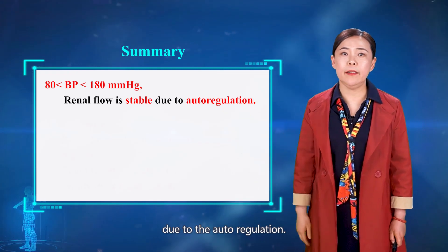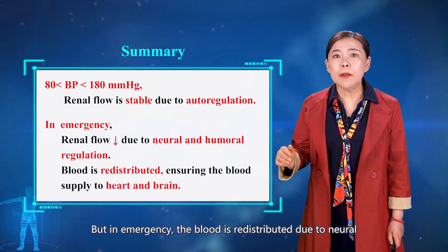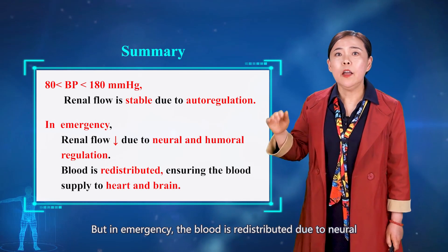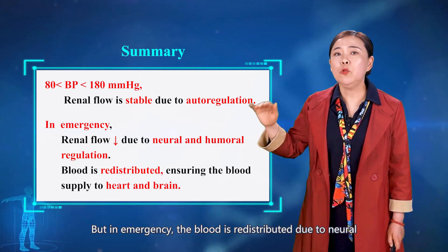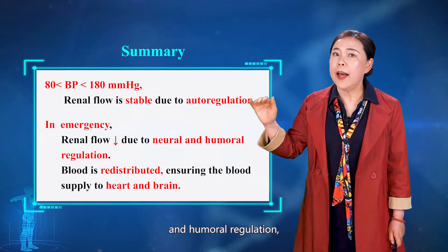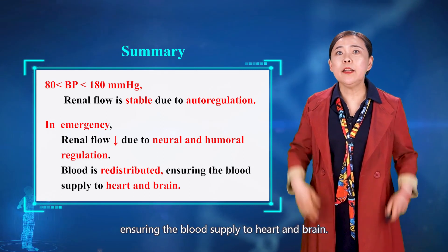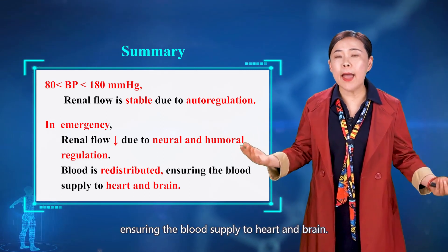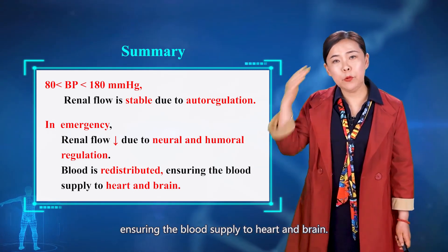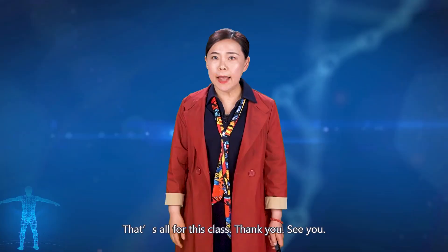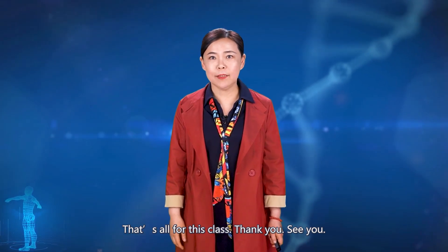In emergency, the blood is redistributed due to neural and humoral regulation, ensuring the blood supply to the heart and brain. That's all for this class. Thank you, see you.